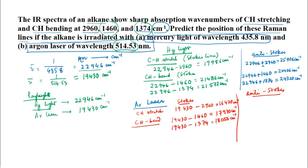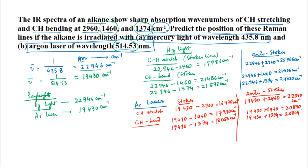For the argon laser anti-Stokes lines: the C-H stretch will be at 19430 + 2960 = 22390 cm⁻¹. For the C-H bends, we will have two lines at 19430 + 1460 = 20890 cm⁻¹ and at 19430 + 1374 = 20804 cm⁻¹. These are the different lines we will observe for the C-H stretch and C-H bend when we irradiate the alkane either with mercury light or with the argon laser.